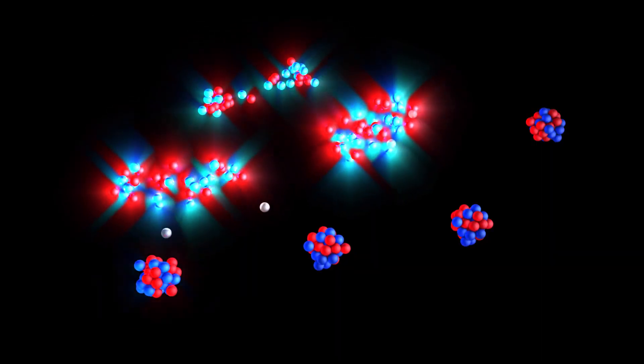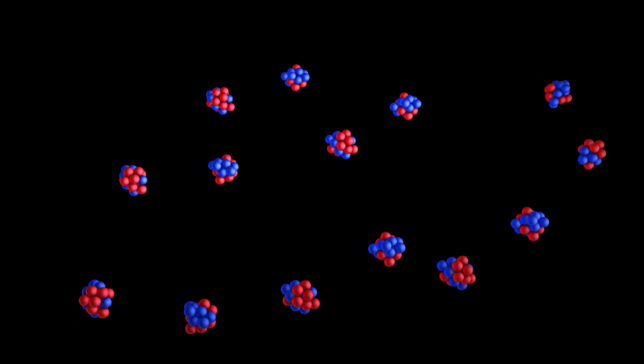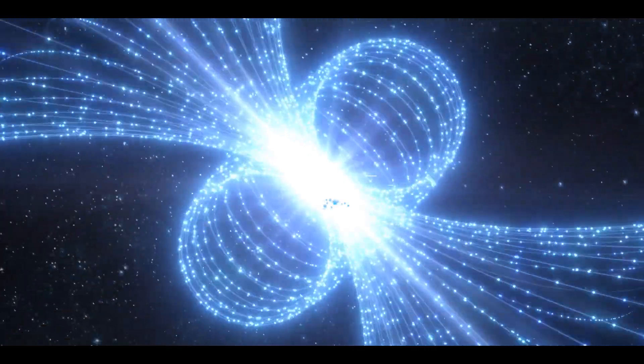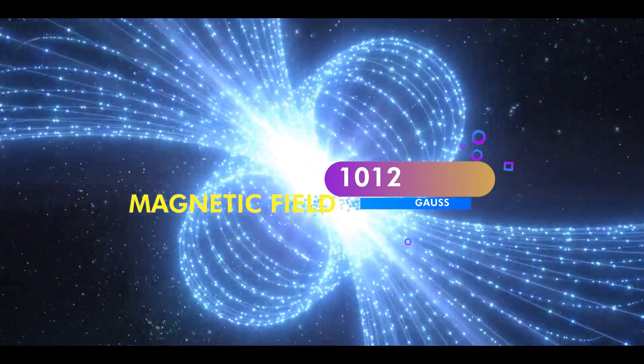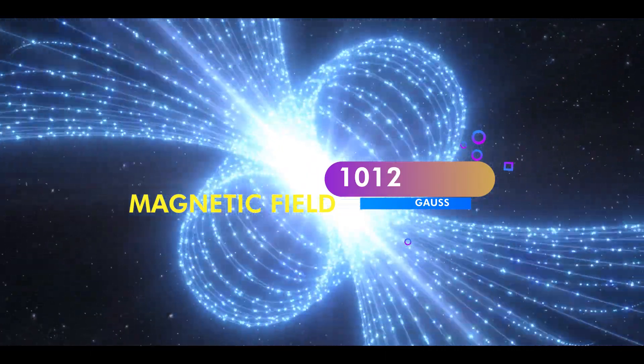A star's surface is covered with neutrons, decaying into protons and electrons. A magnetic field of 10^12 Gauss surrounds the star and rotates alongside it as charged particles are released from the surface.